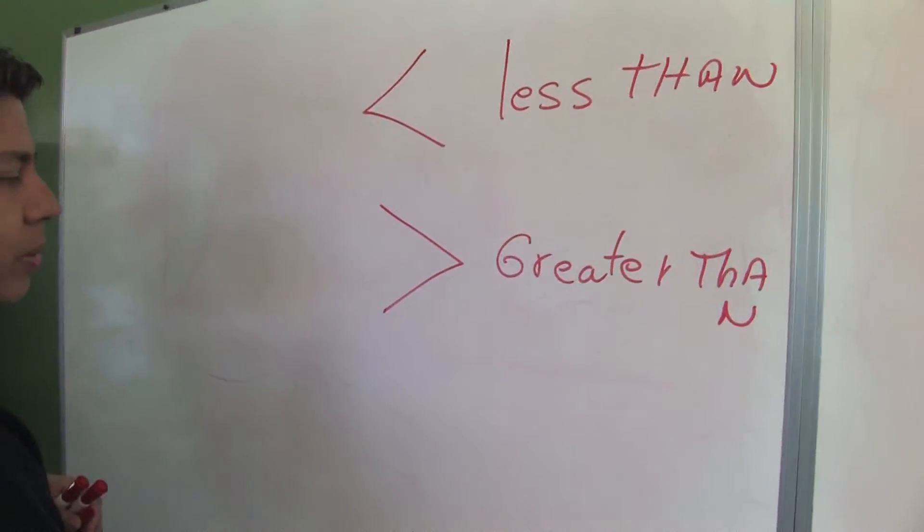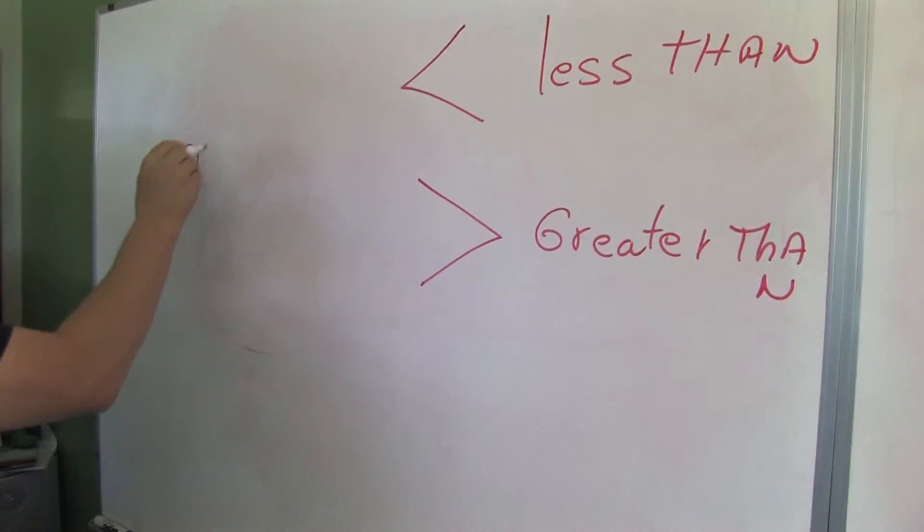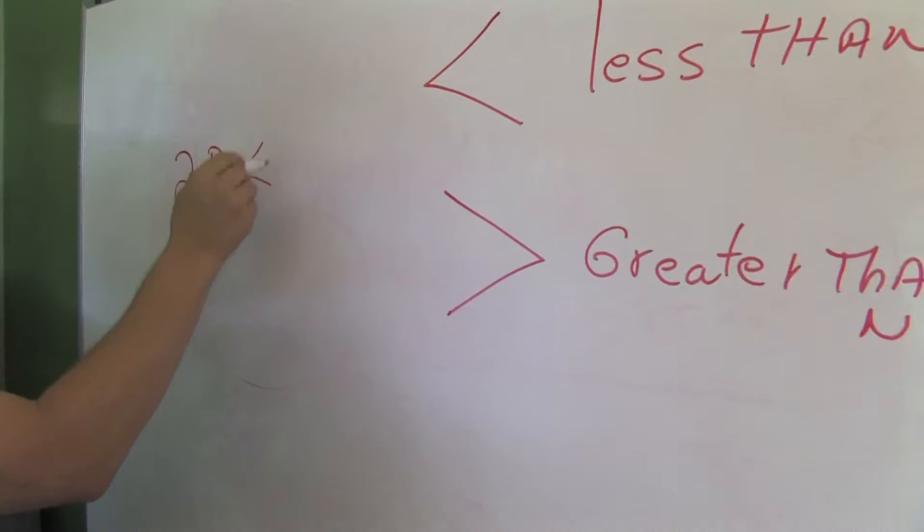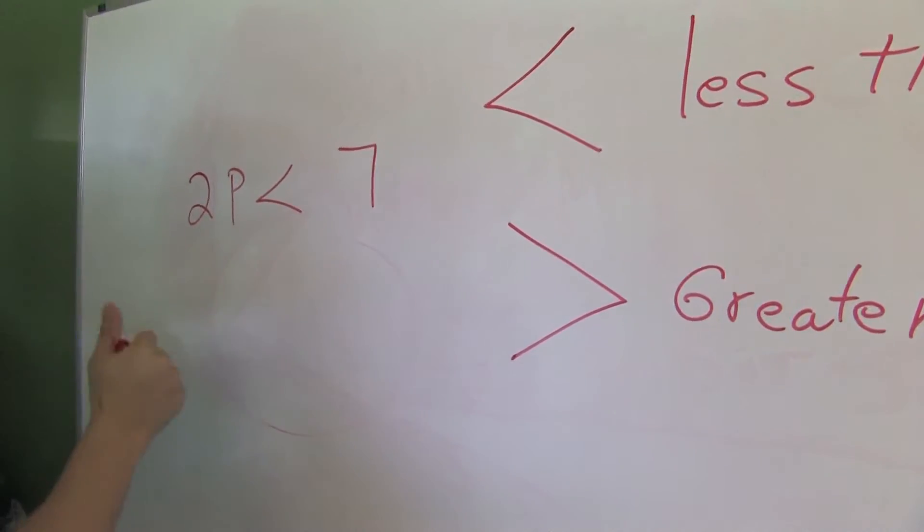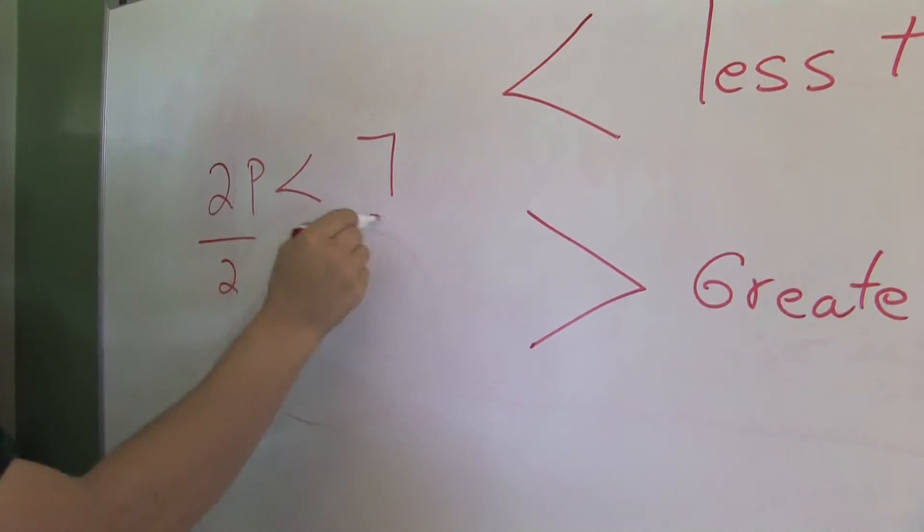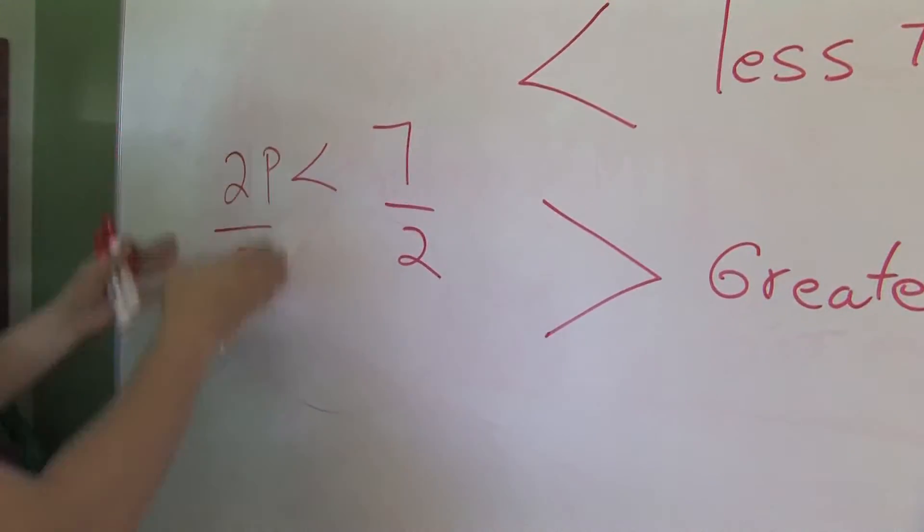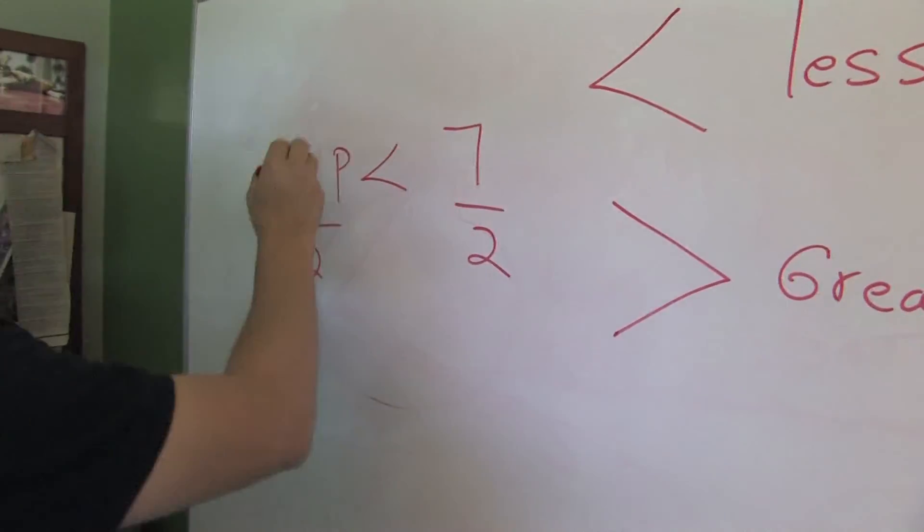Let's calculate an inequality real quick. For example, 2P is less than 7. We want to get the P alone. That's what we want. So, divide by 2, divide by 2, because whatever you do to one side, you have to do to the other. Basic rule in algebra.